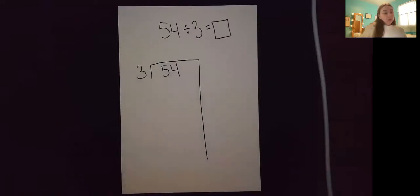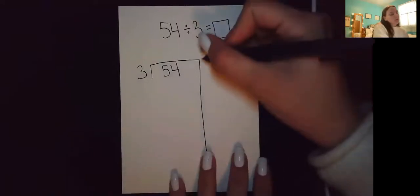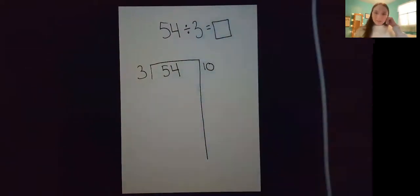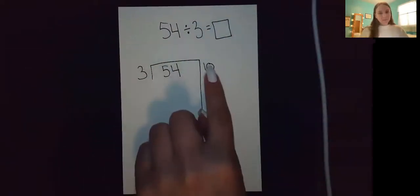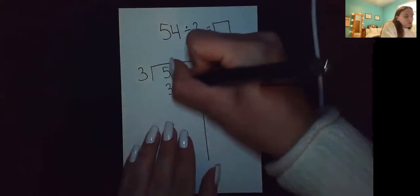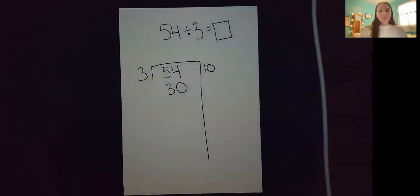So I know for a fact, three times 10 is 30. So what I will do is I will write the 10 on the outside of the seven. Three times 10 is 30. So I'll write that 30 right below the 54.